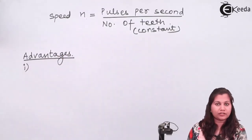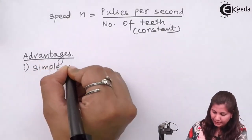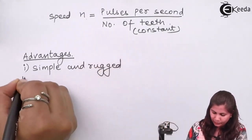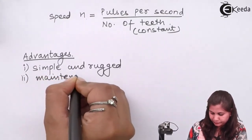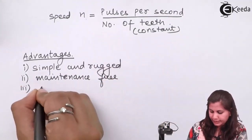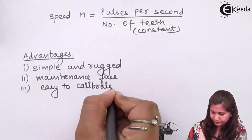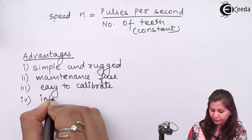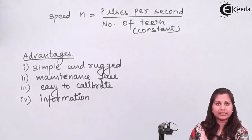The advantages of the toothed rotor variable reluctance tachometer are: it is very simple and rugged in construction, it is maintenance-free, easy to calibrate, and because it has a digital output the information can be easily transmitted.